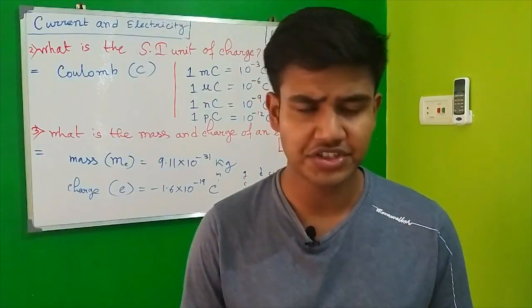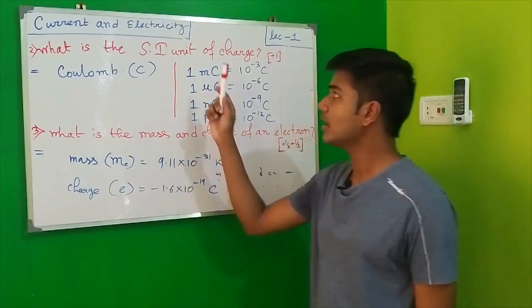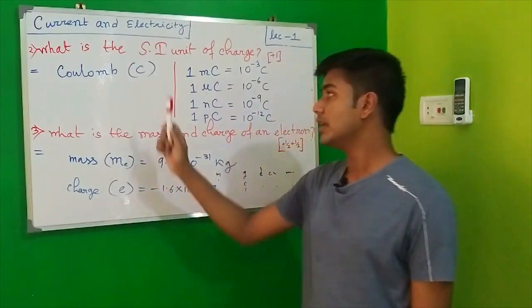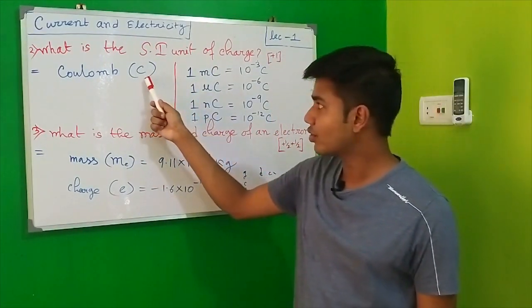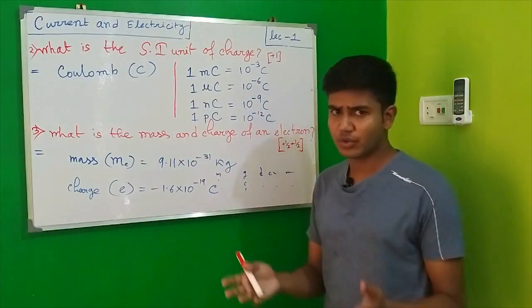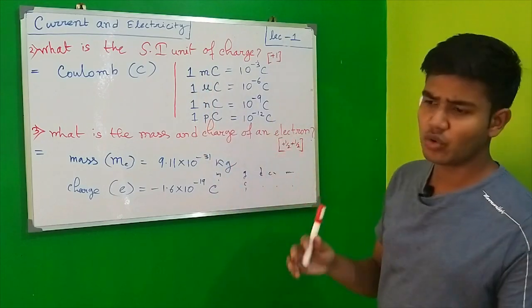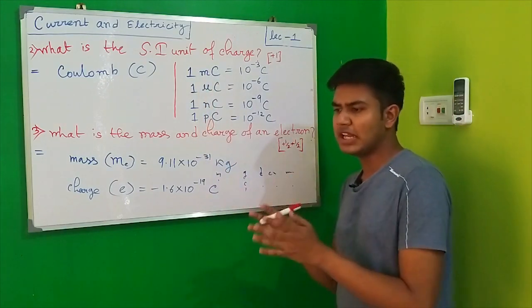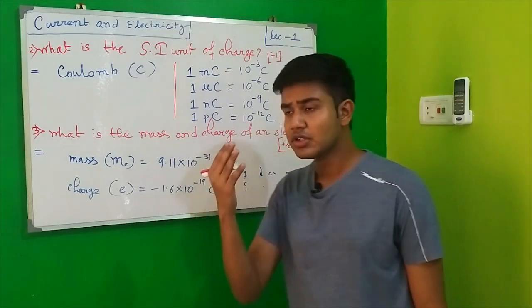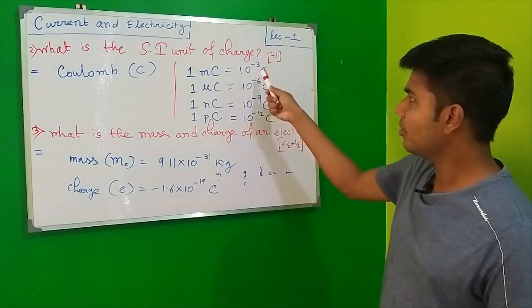Now we will discuss some important questions related to charge. First question: what is the SI unit of charge? The SI unit of charge is coulomb, denoted by C. There are many conversions: 1 millicoulomb equals 10⁻³ coulomb, similar to how 1 milligram equals 10⁻³ gram.